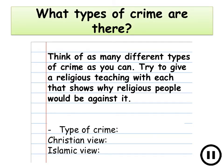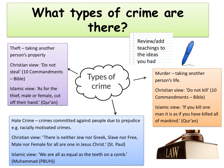Next we need to look at the types of crime there are. Think of as many different types of crime as you can and try to give a religious teaching with each that shows why religious people would be against that type of crime specifically. Give the type of crime and then a Christian view, an Islamic view, or both. Give yourself five minutes, pause the video and think of as many as you can. These are the types of crime you have to know about for your exam.